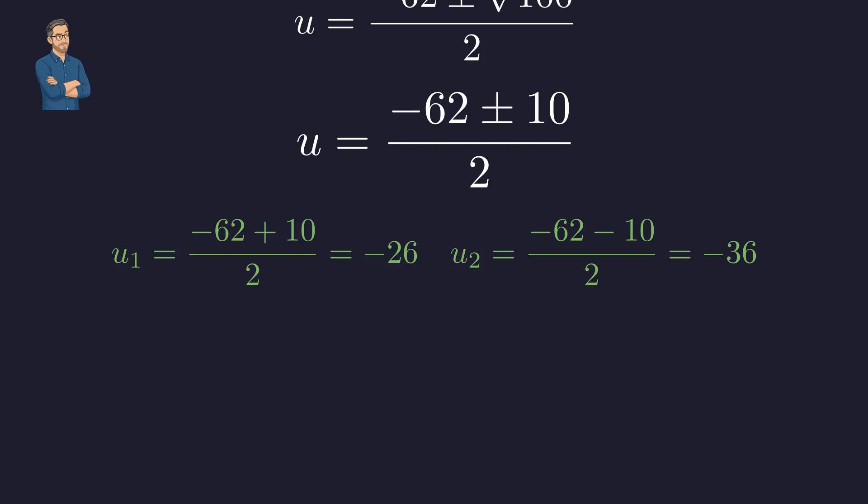Taking the square root simplifies our expression further. This gives us two distinct values for u, -26 and -36.